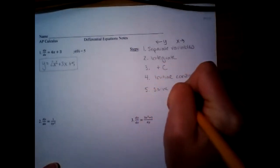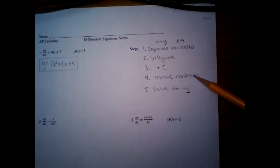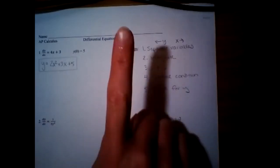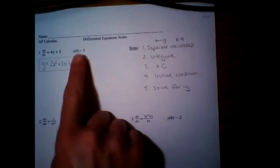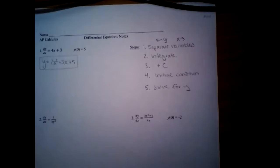Lastly, solve for y — get y by itself, so your answer should be y equals something. If there is an initial condition, you are finding one specific answer. If you're not given an initial condition and you just leave plus C, you've found the general solution, which is an infinite number of answers because C could be anything. I'm hammering that hard because I want you to understand what it is you're actually finding.